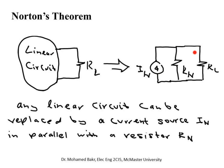If you want the voltage across the load resistor, the total load seen by the Norton source is the parallel combination of R_N and R_L. The voltage drop will be equal to I_N multiplied by the parallel combination of R_N with R_L. So the basic concept is: replace a linear circuit, regardless of how complicated it is, by just one current source and one resistor.